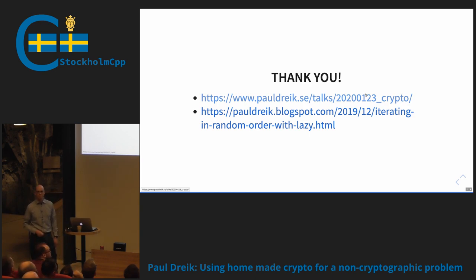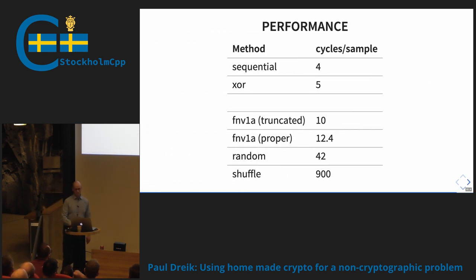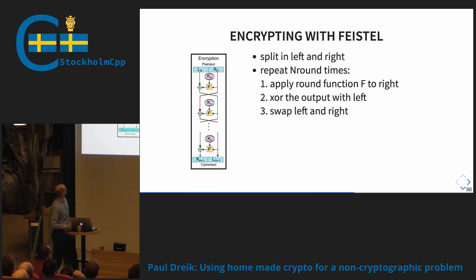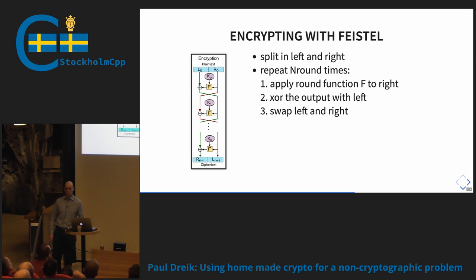Question: does the rounding function have to be one-to-one? No. The rounding function can be anything — it can even return zero. It will be a really lousy cipher, but it will still work. That's the beauty of the Feistel structure: anything you put in F, any round function, is guaranteed to produce a working cipher. I've played around with CRC32 since there's hardware support for it, bit deposit functions — you can just go wild.